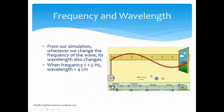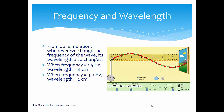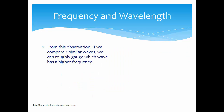To summarize: frequency is 1.5, wavelength is 4 cm. Frequency is 3, the wavelength is reduced to 2. But if the frequency is reduced to 0.75, half the wavelength is 4, which means 1 full wavelength is 8. So from our observation, if we compare two similar waves, we can roughly gauge which wave has a higher frequency.